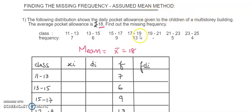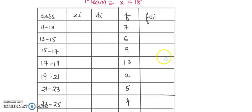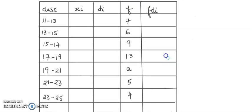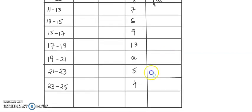In this question, the following distribution shows the daily pocket allowance given to children of a multi-story building. The average pocket allowance is rupees 18. This average pocket allowance is nothing but the mean, that is why I have written mean equals x-bar, that is 18, which is given. First we will apply the assumed mean method as usual in the given table and then we will use this given mean.